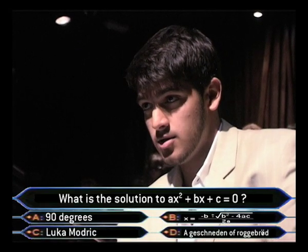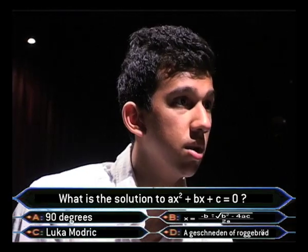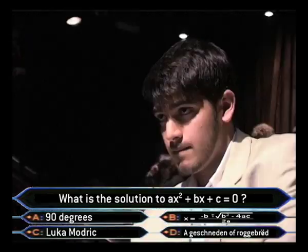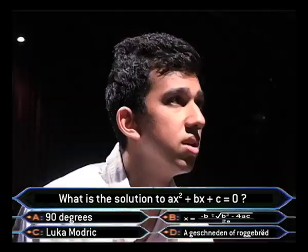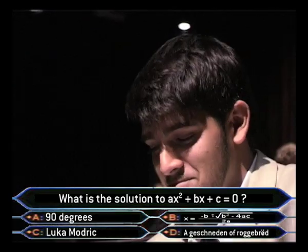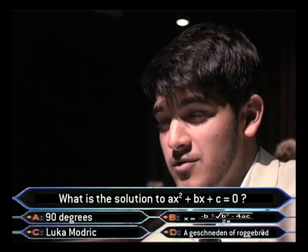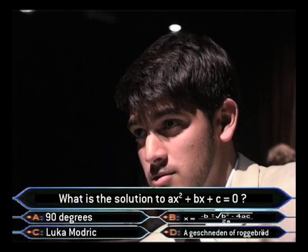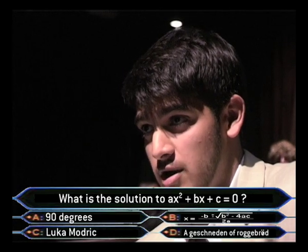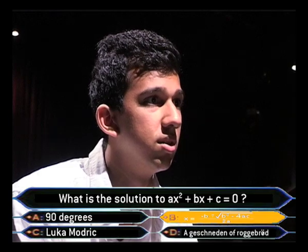I need an answer, Matswala. It's B! x equals negative b, plus or minus the square root of b squared minus 4ac, and you divide it all by 2a. So, for 20 million rupees, this is your final answer. Final answer? Let's take a break.